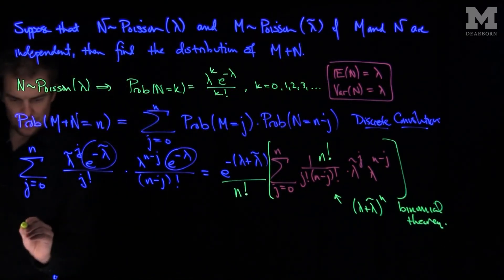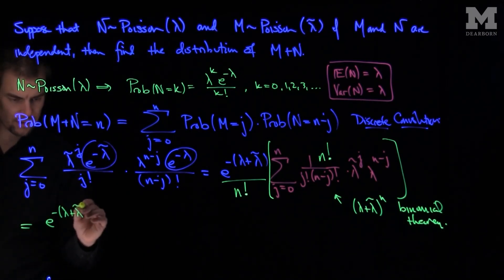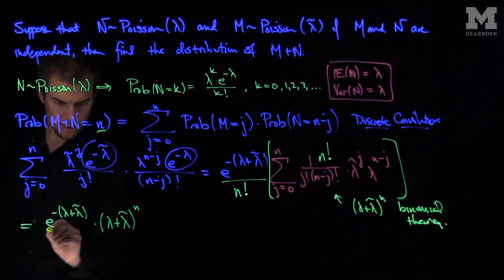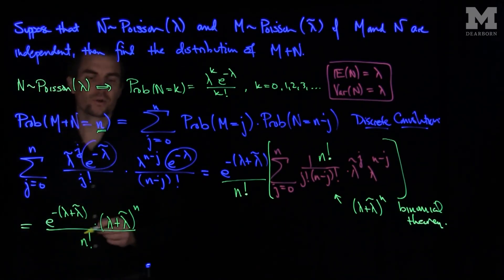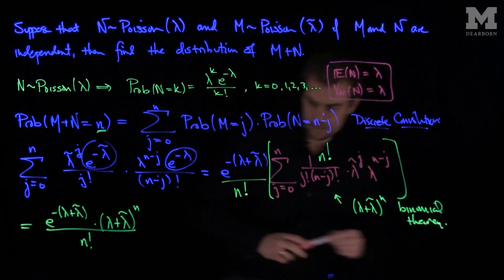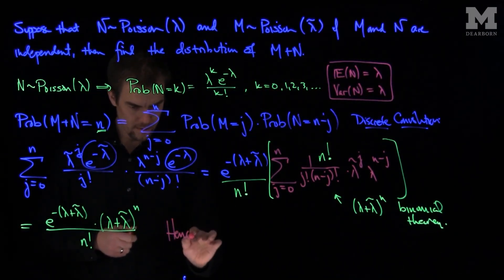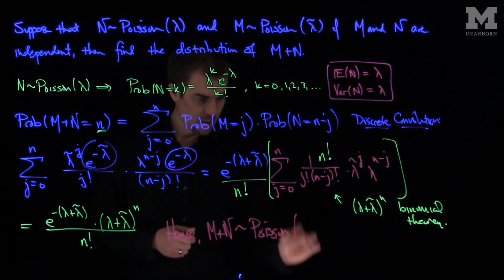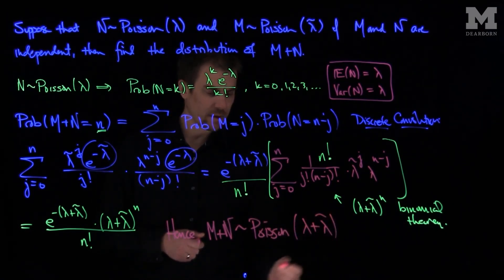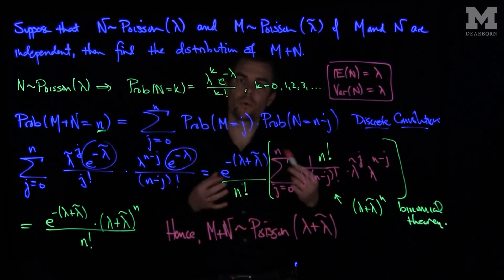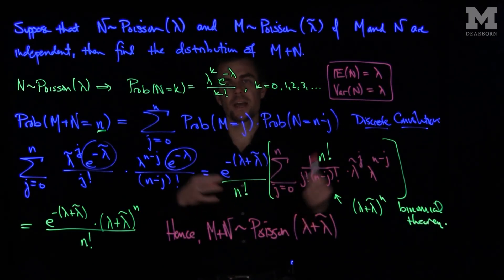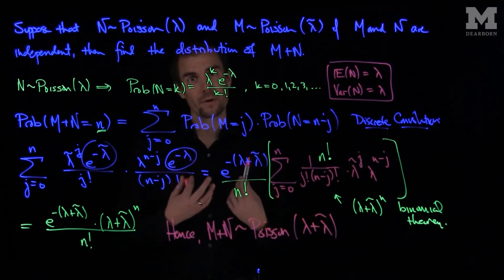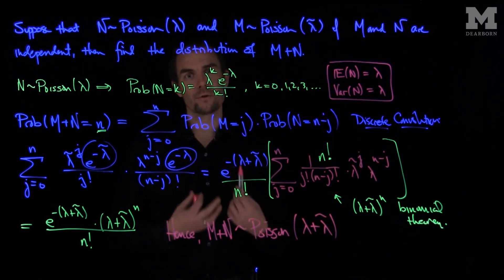So the entire expression equals e to the negative lambda plus lambda tilde, times lambda plus lambda tilde to the power n, divided by n factorial. Hence, m plus n is itself a Poisson random variable with parameter lambda plus lambda tilde. The upshot is that if you add two independent Poisson random variables with parameters lambda and lambda tilde, you get another Poisson random variable whose parameter is the sum of the two parameters.